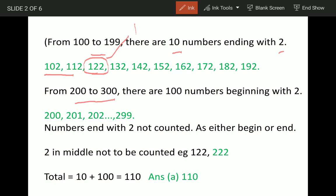From 200 to 300, there are going to be 100 numbers. These 100 numbers start from 200, 201 till 299.